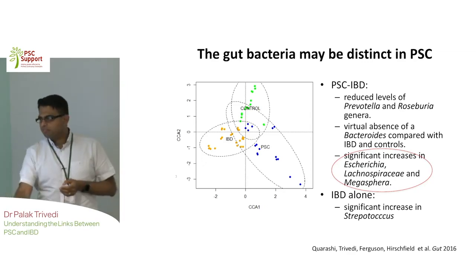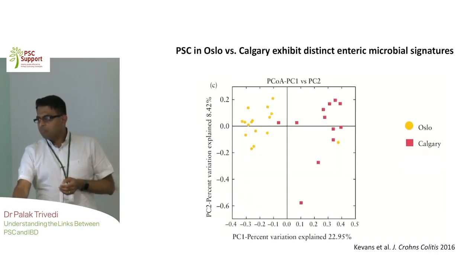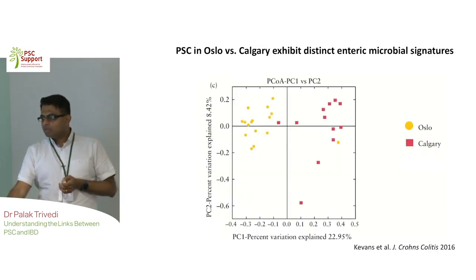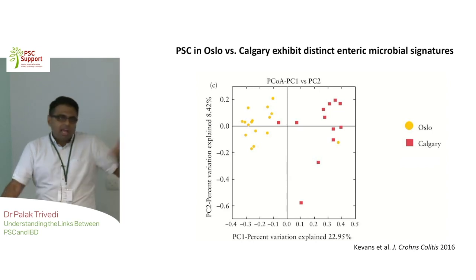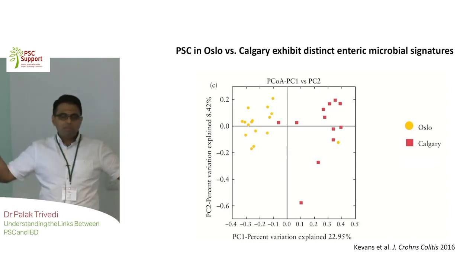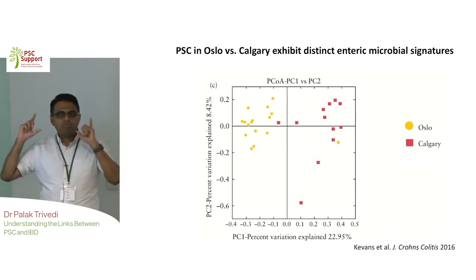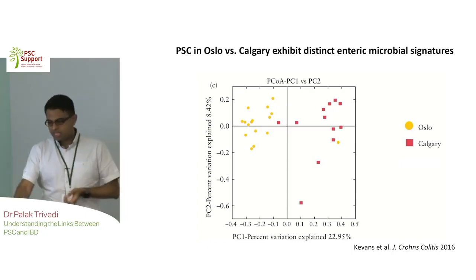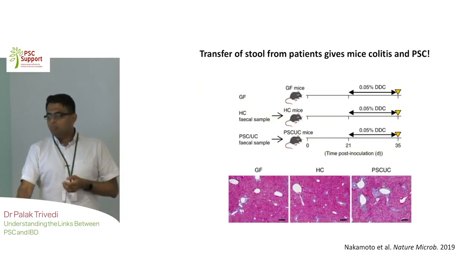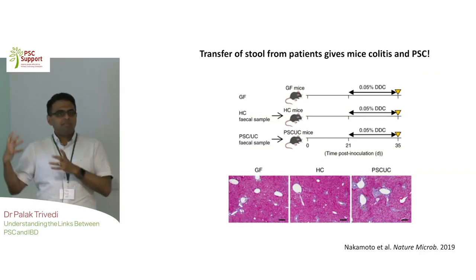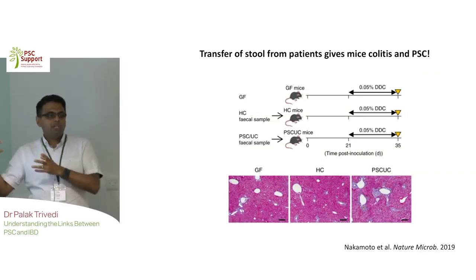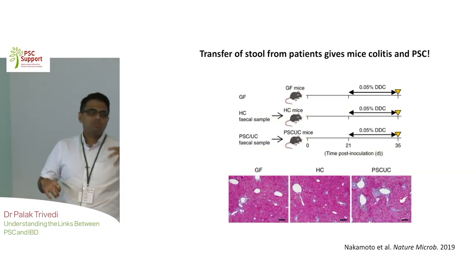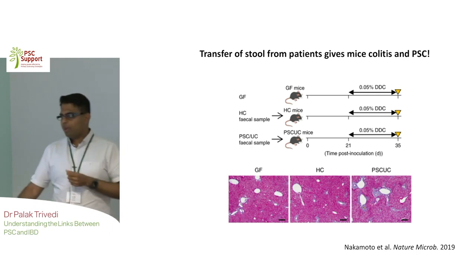There are differences if you look at PSC patients from Calgary in Canada, and patients in Birmingham and patients in Oslo. It's not the fact that there is one specific type of gut bacteria linked to PSC, but in any given population, the PSC bowel bugs will be different to healthy control bowel bugs.